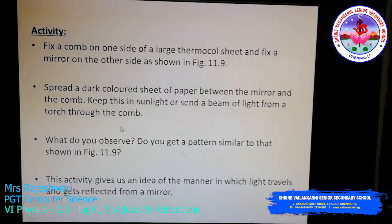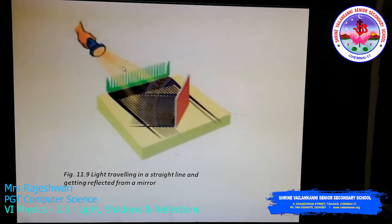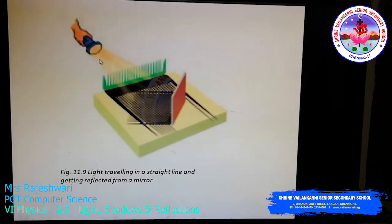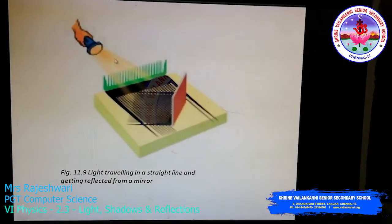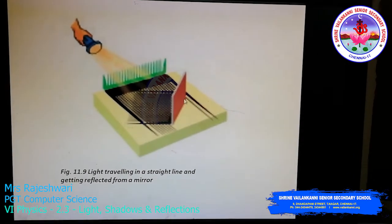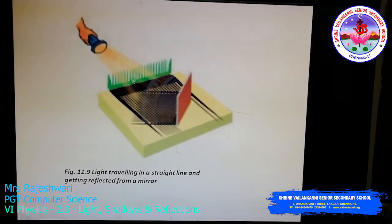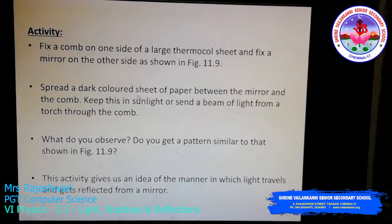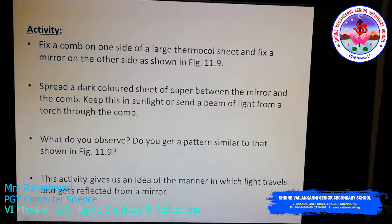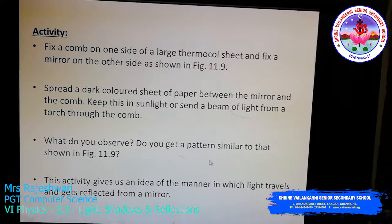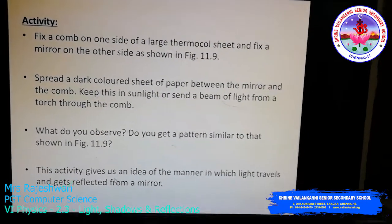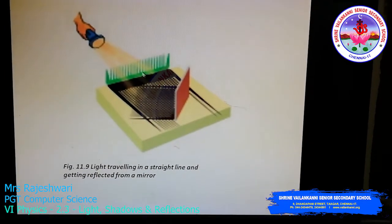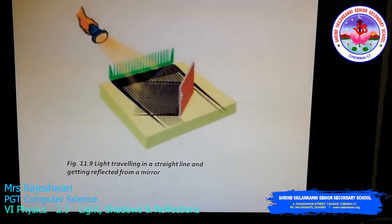See here — they are sending a beam of light from a torch through the comb. When you pass the beam of light through the comb, the light travels in a straight line and falls on the mirror. You can then see a pattern of reflected light from the mirror on the dark sheet, which is the reflection. The light travels from the torch, through the comb in a straight line, and gets reflected off the mirror.